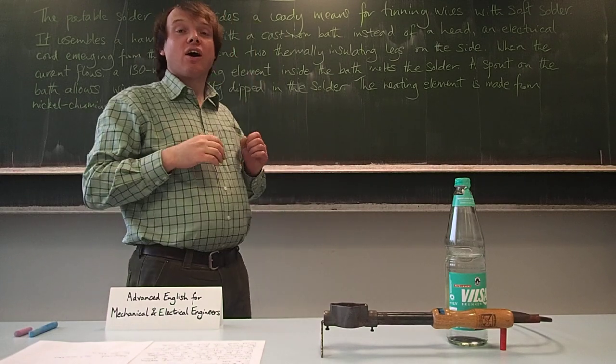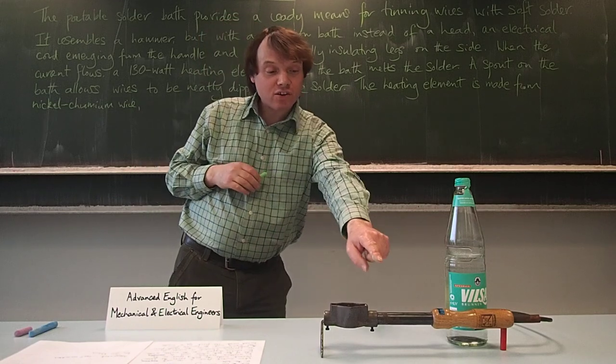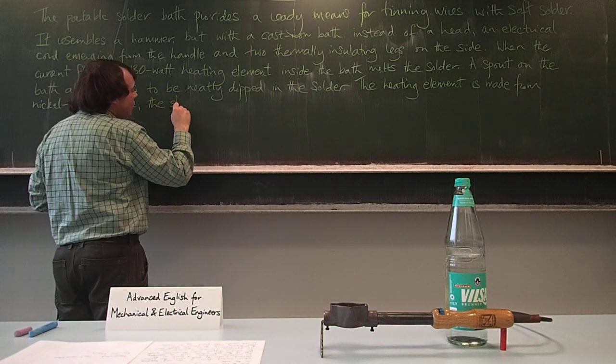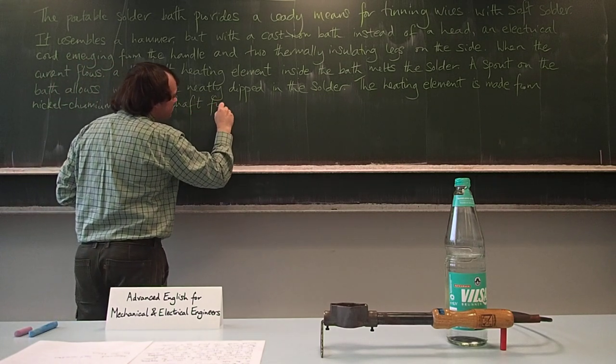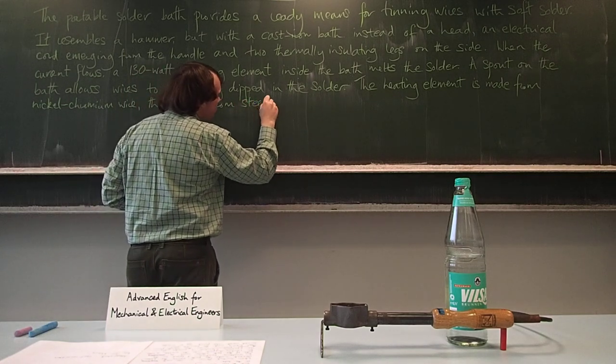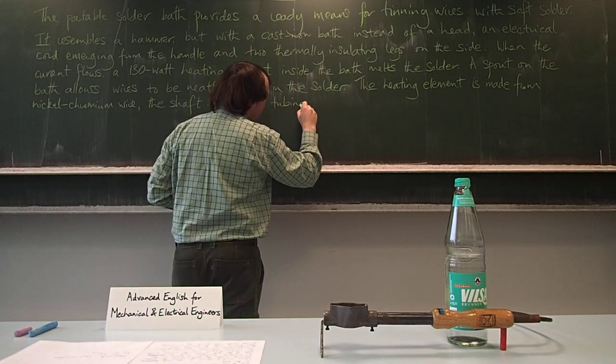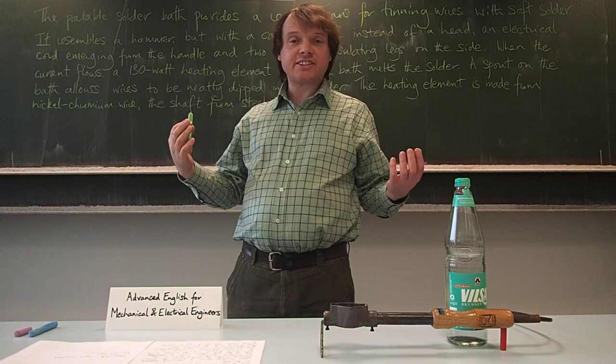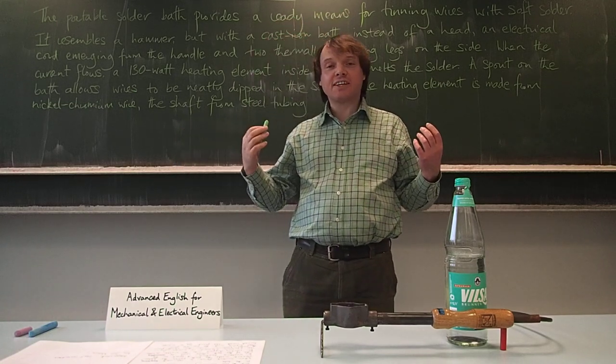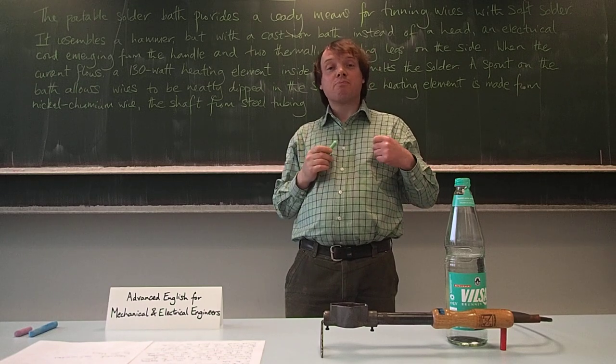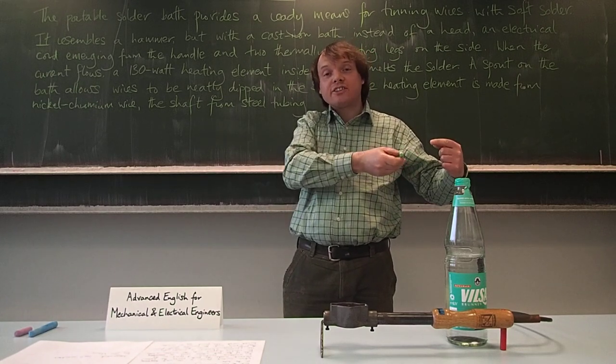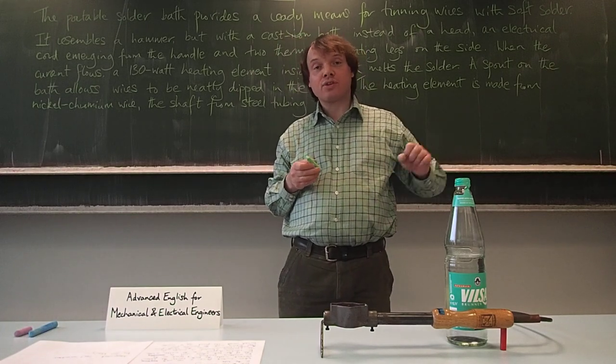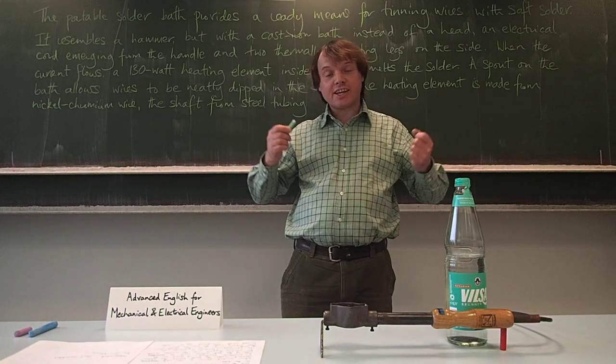So the heating element is made from nickel chromium wire. We've already said earlier that the bath is made from cast iron. So we can look at the shaft here, this part in the middle: the shaft from steel tubing, and the handle here which needs to be insulating. It's made of wood and the manufacturing process was turning. So it's been put into a lathe, it's been spun around and a sharp point has been used, like a sharp chisel, to strip away the wood and create a nice smooth curved surface with rotational symmetry.